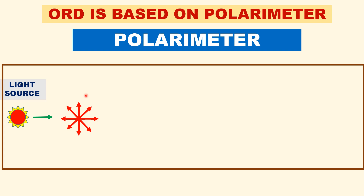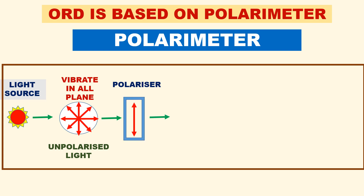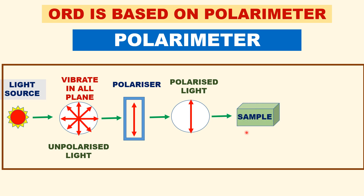The light vibrates in all planes, so it is called unpolarized light. It is then allowed to pass through a polarizer, where it is converted into a plane-polarized beam, vibrating in only one plane. This polarized light is then allowed to pass through an optically active sample. If your sample is dextrorotatory — a D-enantiomer — it will rotate the plane-polarized light to the right, that is, clockwise.